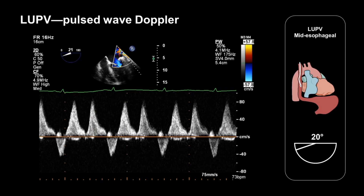Assessment of pulmonary vein flow patterns can be particularly valuable in mitral regurgitation. A specific indicator for severe mitral regurgitation is systolic flow reversal — in other words, an inverted S wave — although this only applies if the regurgitant jet doesn't impinge directly upon the pulmonary vein being assessed.